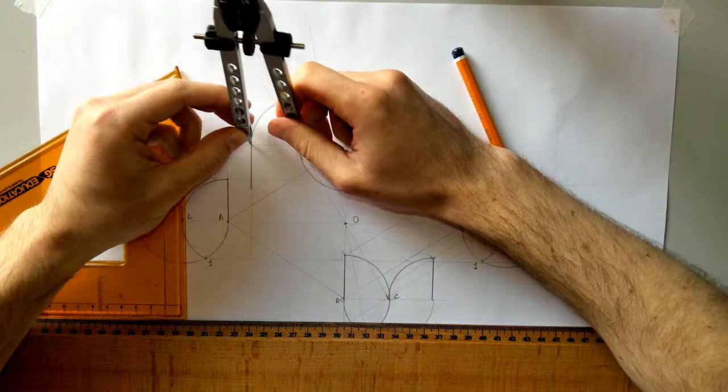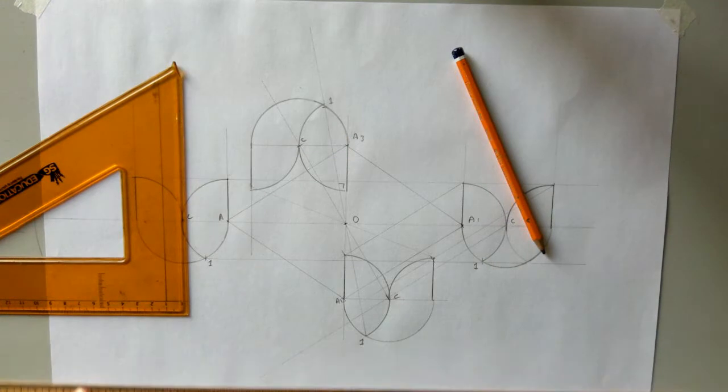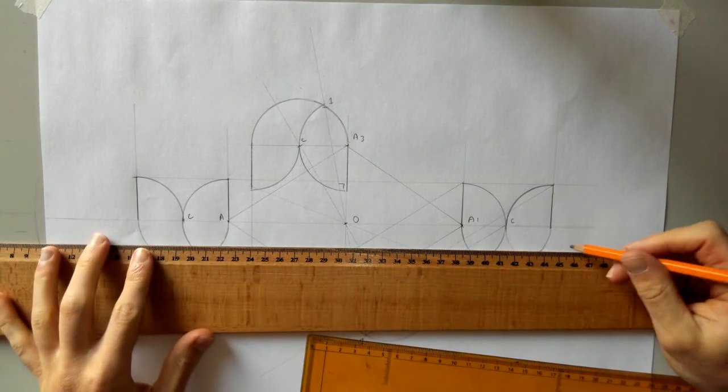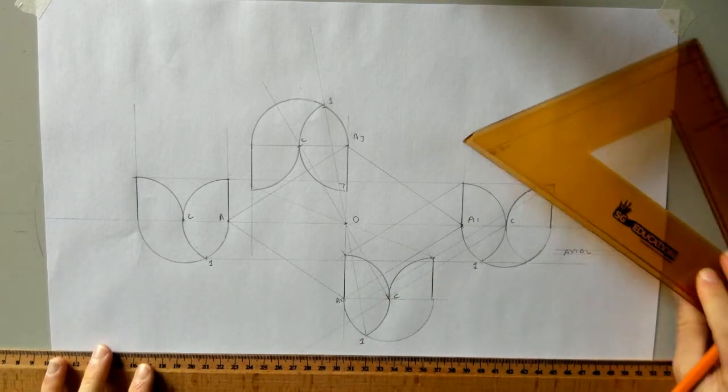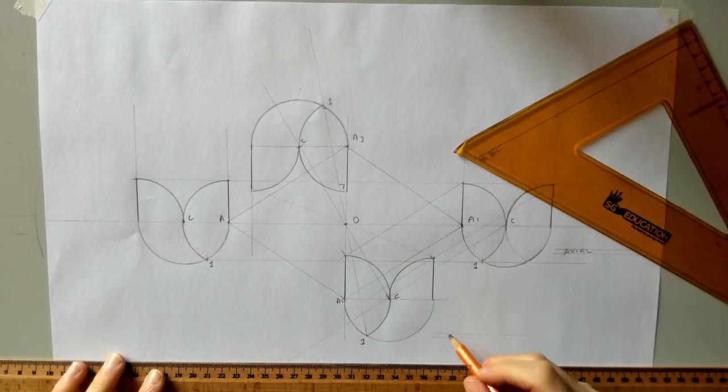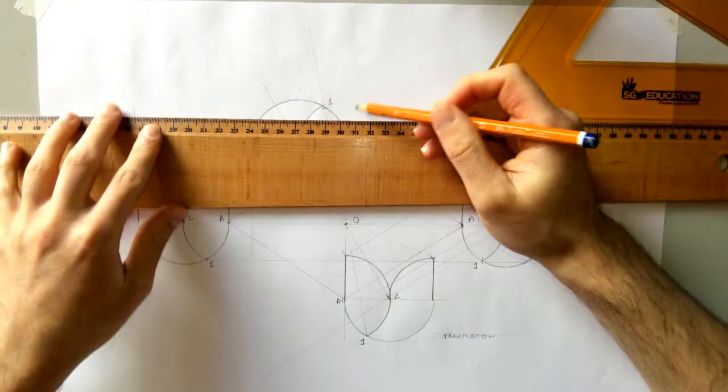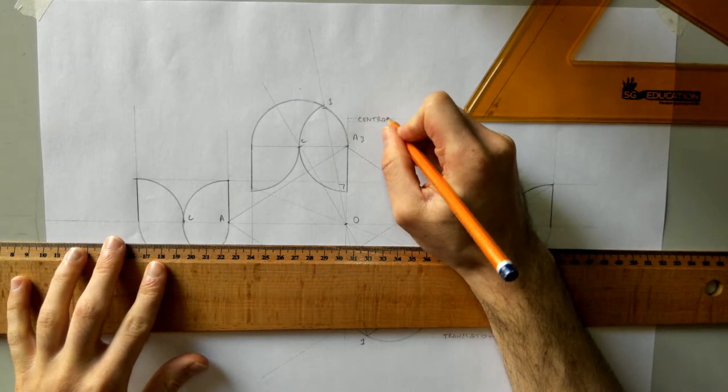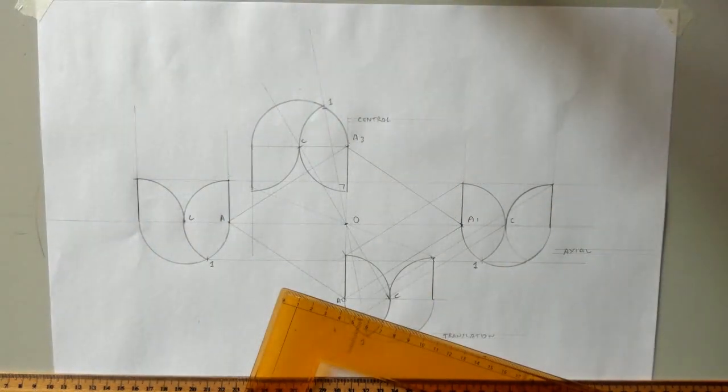And then I can take that arc there, and that'll complete the question then. So from A to A1 it was axial, this one here was translation, and this one up here central.